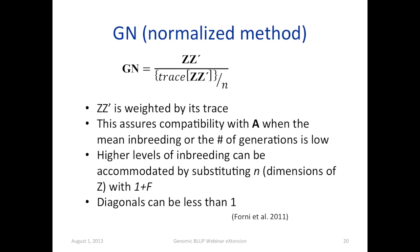And the normalized method, the ZZ prime is weighted by the trace of the ZZ prime. So this method makes sure that the outcome is compatible with A, especially when the inbreeding or the number of generations is low.